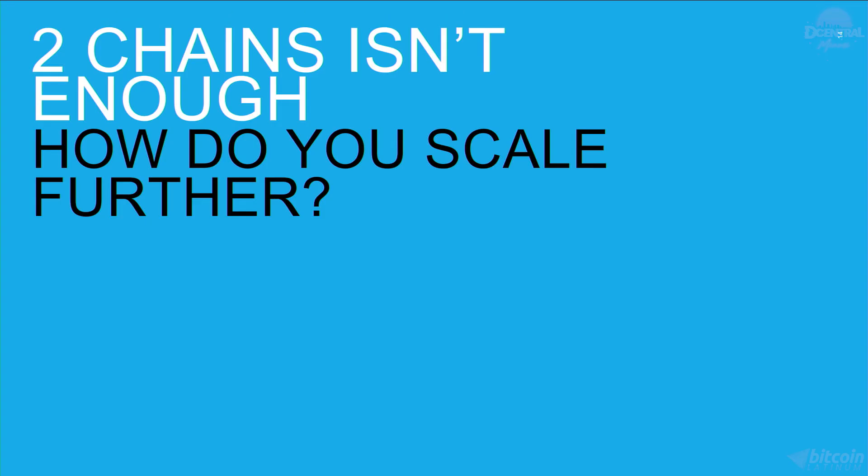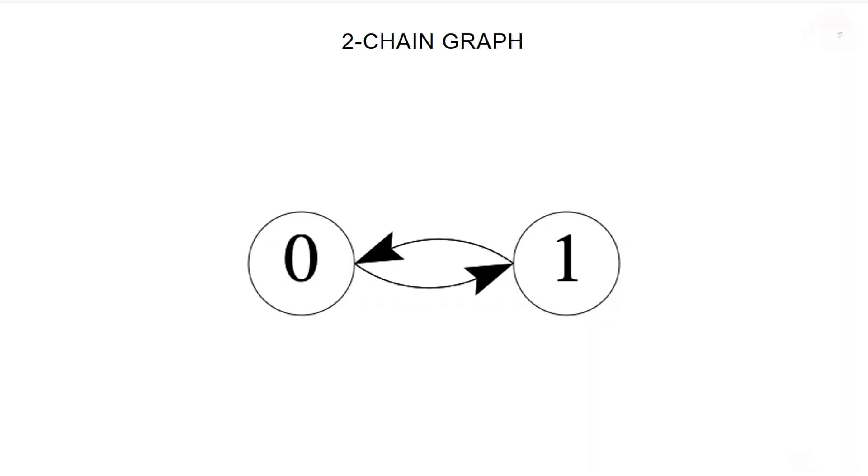We can do it with two, but that's not enough to scale to significant loads. So how do we scale up further? If we collapse the previous diagram and only look at one layer, the chains are connected as we see here.